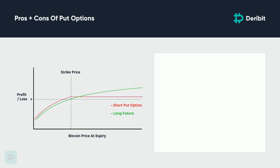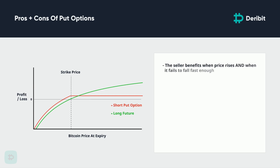This brings us onto why a trader would choose to sell a put option. The put option seller benefits not only when the underlying price rises, but also when it fails to fall fast enough before the expiry date. If the price expires above the strike price, the seller gets to keep the entire premium. Even if the price falls, they can still make some profit as long as it doesn't fall past the breakeven point at expiry. The downside for the seller is that they do not have the benefit of fixed risk. If the underlying price keeps falling well past the strike price, the losses will continue to rise — and with options using the asset itself as collateral, this can quickly become considerably more than the seller intended to risk when measured in Bitcoin.